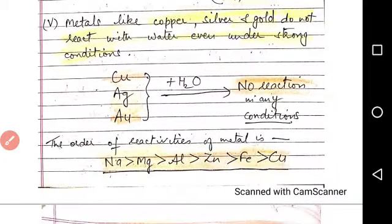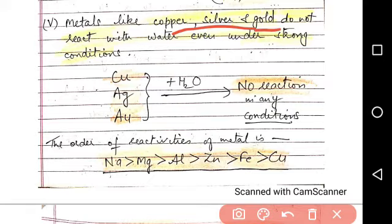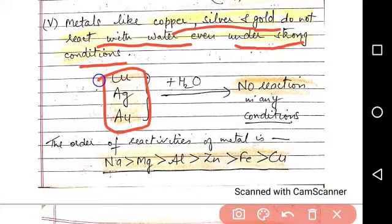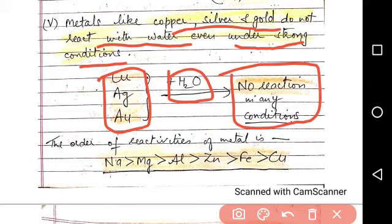Metals like copper, silver and gold, which come below hydrogen in the reactivity series, they do not react with water even under very strong conditions. Whatever conditions we take, whether hot water, boiling water, steam, these metals do not react with water under any conditions.